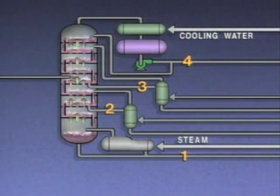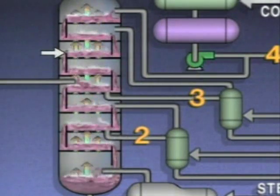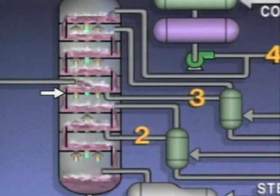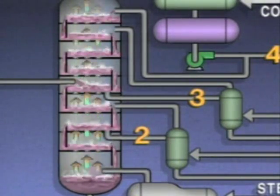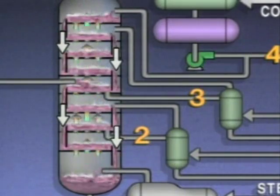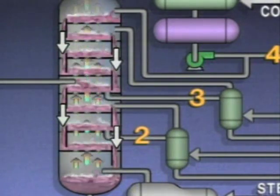The liquid in each tray in the tower collects to the height of a weir, which is a dam-like barrier that holds the liquid on the tray at a specific level. If the tray is at a draw-off point, a portion of the liquid is drawn off through a draw-off line. The liquid overflow from each tray is allowed to flow to lower trays through passages called downcomers. This liquid is called internal reflux, which helps ensure that any heavier components have a chance to travel down to their proper draw-off points.